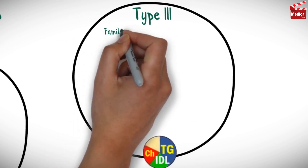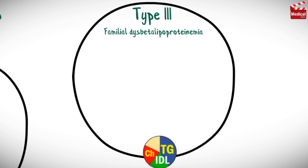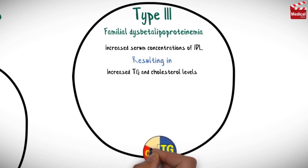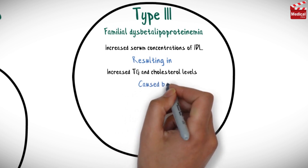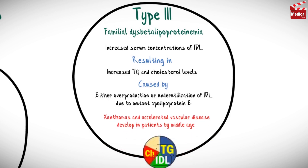Type 3, familial dysbetalipoproteinemia. This type is characterized by increased serum concentrations of IDL, resulting in increased triglycerides and cholesterol levels. It is caused by either overproduction or underutilization of IDL, due to mutant apolipoprotein E. In this condition, xanthomas and accelerated vascular disease develop in patients by middle age.